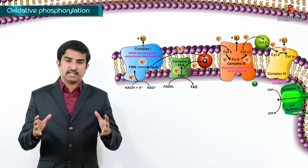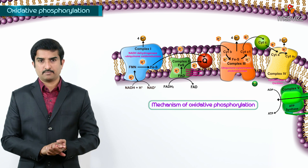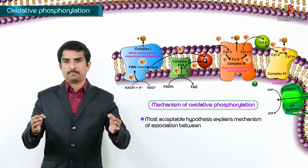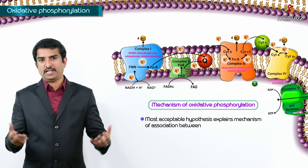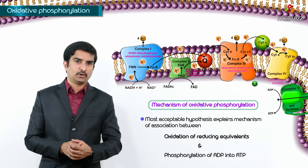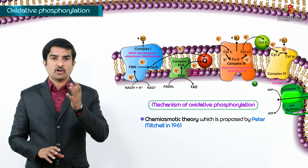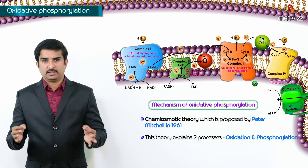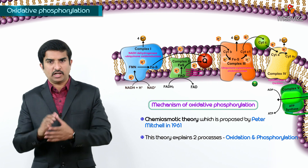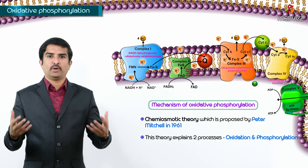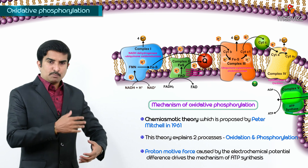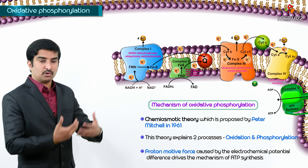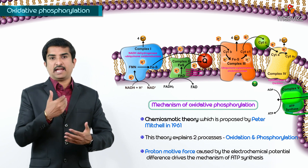Now let us discuss in detail the mechanism of oxidative phosphorylation. There are many hypotheses, but the most widely accepted one explaining the mechanism of association between oxidation of reducing equivalents and phosphorylation of ADP into ATP is the chemiosmotic theory, proposed by Peter Mitchell in 1961. This theory explains that the two processes — oxidation and phosphorylation — are coupled by the proton gradient across the mitochondrial membrane. This proton motive force, caused by the electrochemical potential difference with the matrix being negative as hydrogens are pumped into the intermembrane space, drives the mechanism of ATP synthesis.